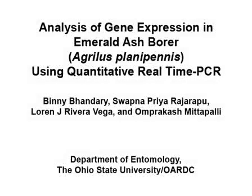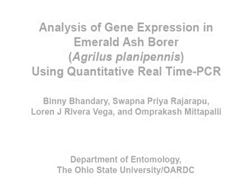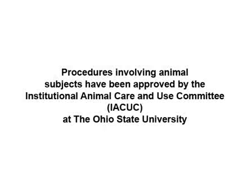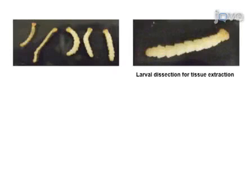The overall goal of the following experiment is to analyze gene expression in tissues and developmental stages of emerald ash borer using quantitative PCR. This is achieved by dissection of larval tissues and categorization of developmental stages.